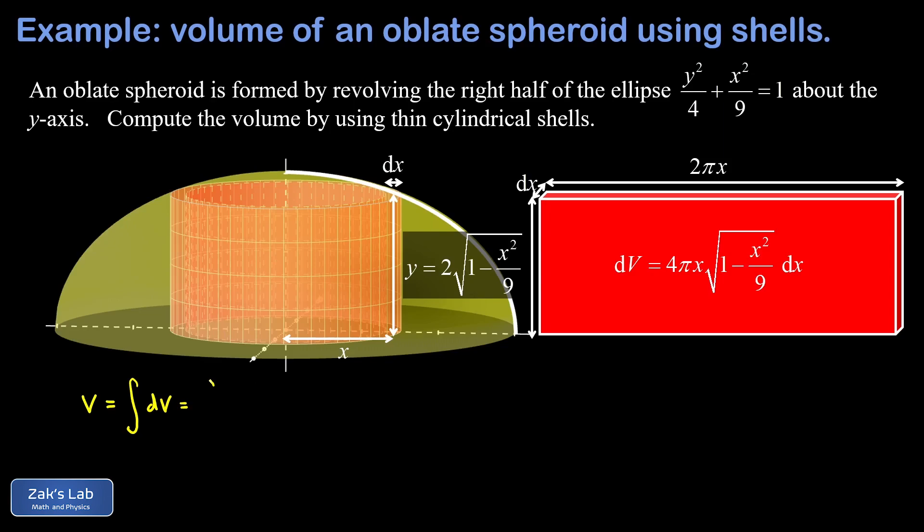Now we just have to sub in our dv and our limits of integration. dv is given by 4 pi x times the square root of 1 minus x squared over 9 dx, and we're adding up the volumes of these shells all the way from x equals 0 to x equals 3. We're in luck on this integral because if I look at the interior of this square root, the derivative of that is negative 2x over 9, and we have an x in our integrand. This should allow us to build the derivative of the interior function into our integrand, which makes it easy to see the chain rule backwards.